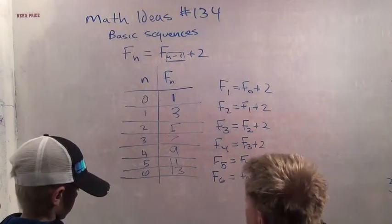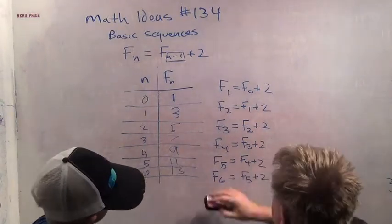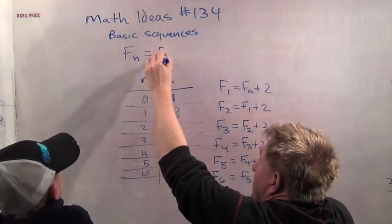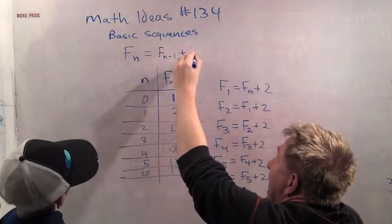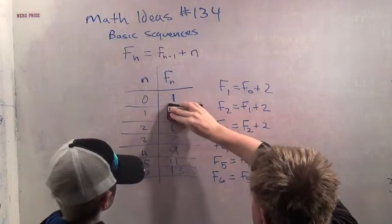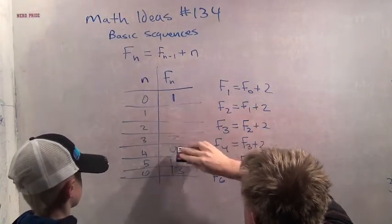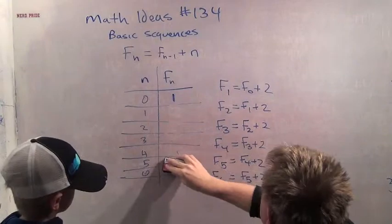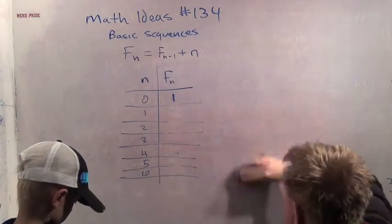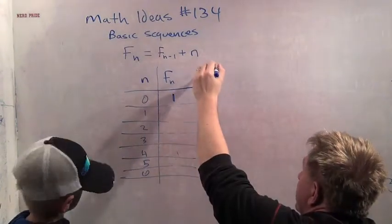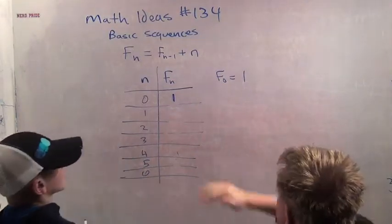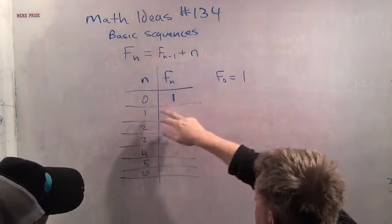Now we're going to do a little bit more complicated sequence. You ready? All I'm going to do is change one thing. F sub n equals F sub n minus 1 plus, this time, n. And again, we're going to start with n equals 0. We're just going to say that F0 is 1. That's how we start. We have to start somewhere. We're going to say F sub 0 is 1.